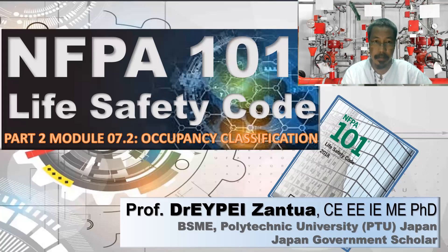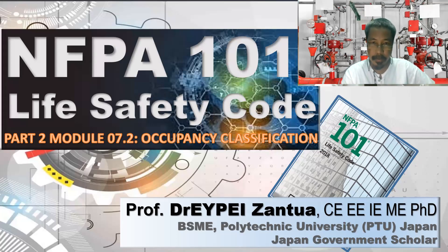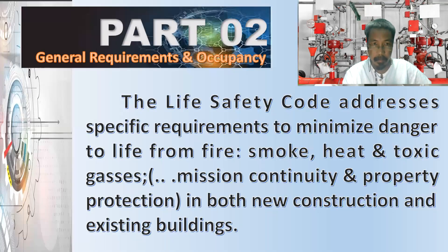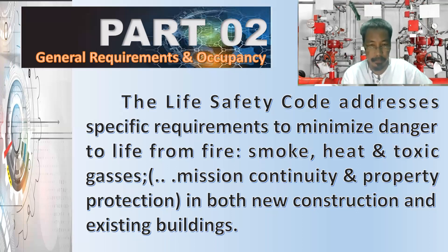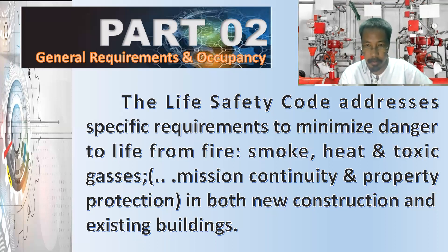This is the second sub-module of module number seven, which discusses occupancy classification. Our code objective states that the life safety code addresses specific requirements to minimize danger to life from fire. This involves smoke, heat, and toxic gases. It also provides vision continuity and property protection in both new construction and existing buildings.